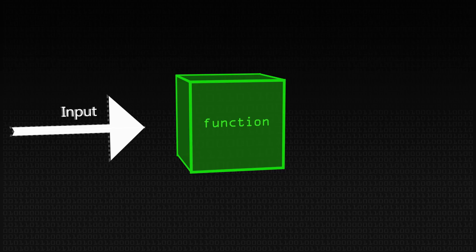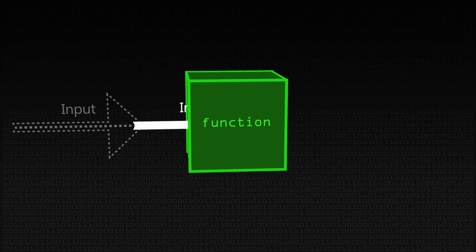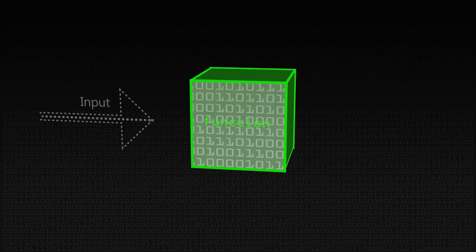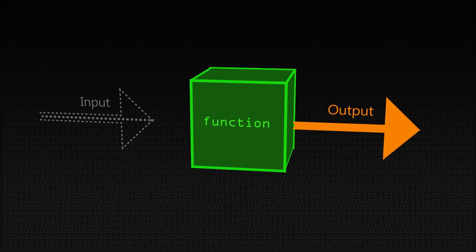We're going to start off with a question: what actually is a function? A function simply takes an input on one side, processes it inside, and then gives an output on the right-hand side. You can think of it as a little box or a little machine — takes an input on one side, processes it inside the box, and then produces some output on the other side.